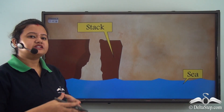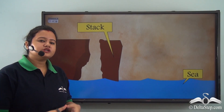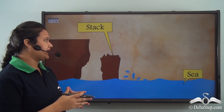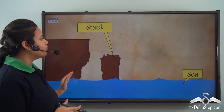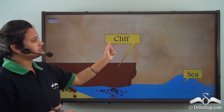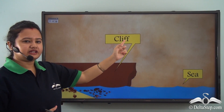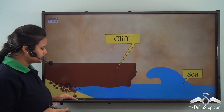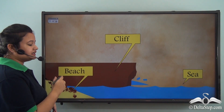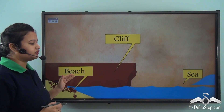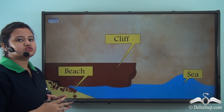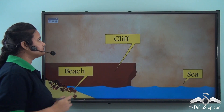Over time, due to continuous erosion by sea waves, the stack also falls off and a steep vertical structure develops just beside the sea, which is known as a cliff. The eroded sediments are further deposited at the side of the shore, forming the beach. So cliffs and beaches are also formed due to the action of sea waves.